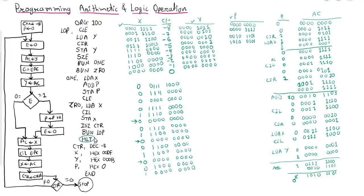It is not 0, so go to loop. This extended accumulator becomes 0, then LDA Y: value of Y is all 0. Next CIR — no change in value of Y. Store Y done. SZE: external accumulator is 0, so skip this instruction and execute BUN ZRO. LDA X — value of X: 0, then 1 triple 0 and all 0. CIL: 1 will shift, then all 0. STA X: new value of X is all 0. Counter ISZ: -1 incremented to 0 — since it is 0, skip next instruction, which is halt — stop execution.